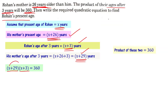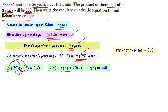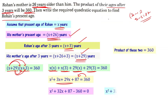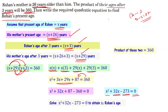Expanding (x + 3)(x + 29): x·x + x·3 + 29·x + 29·3 = 360, which gives x² + 3x + 29x + 87 = 360. Combining like terms and transposing: x² + 32x + 87 − 360 = 0, which simplifies to x² + 32x − 273 = 0. This is the required quadratic equation. Solving it gives Rohan's present age.